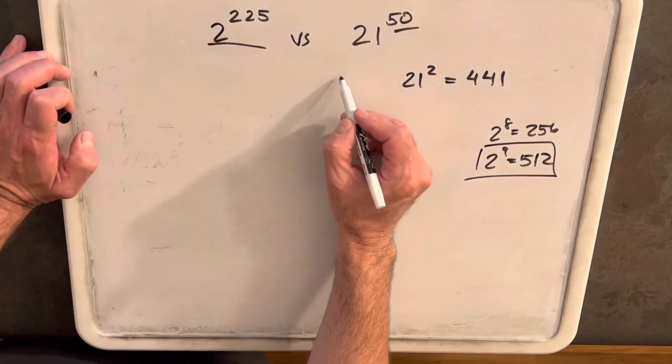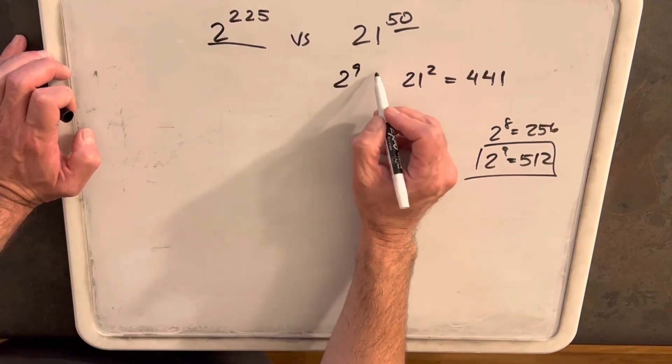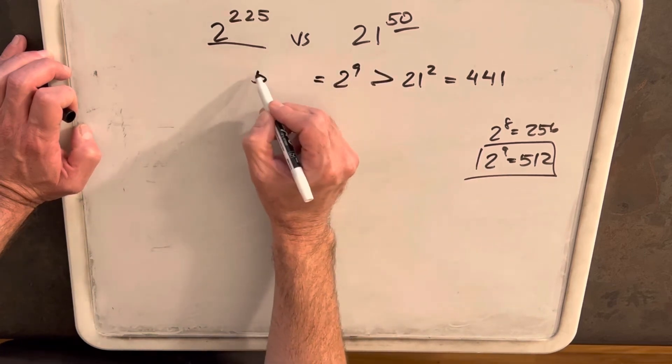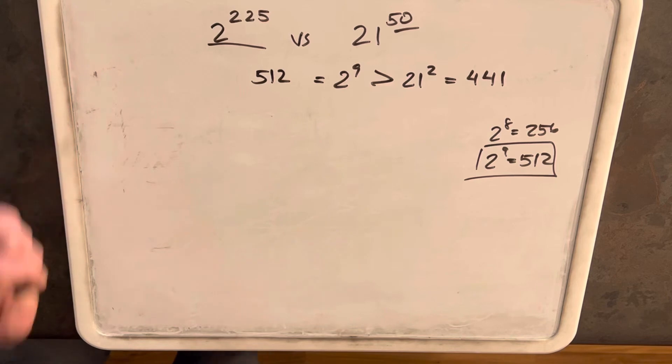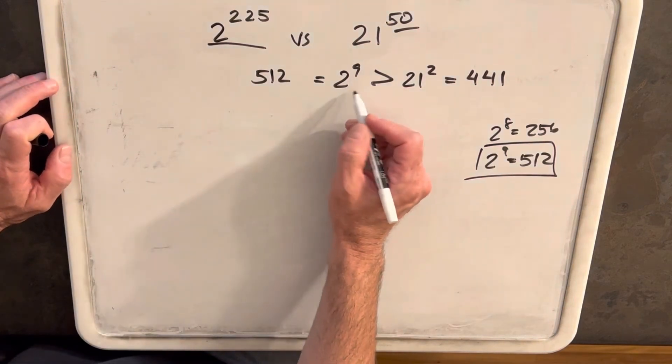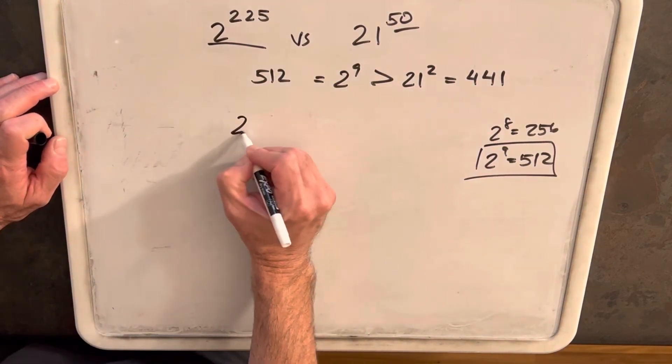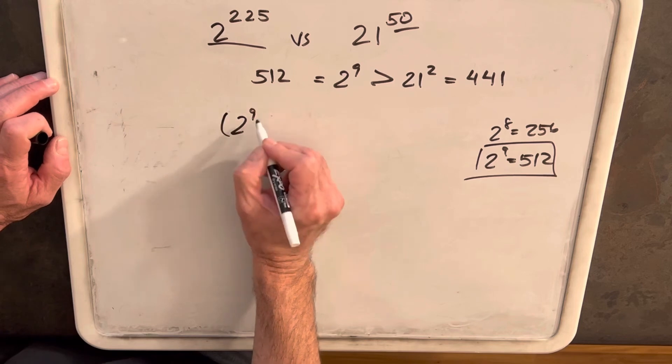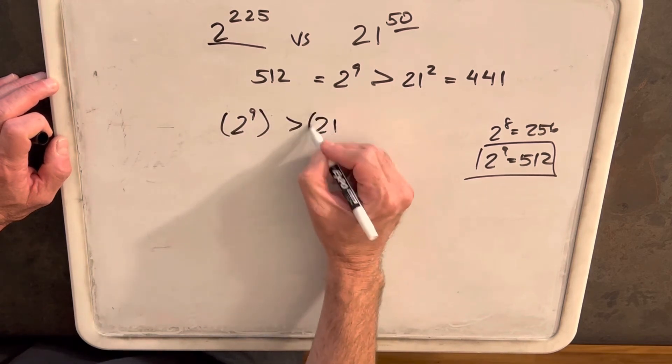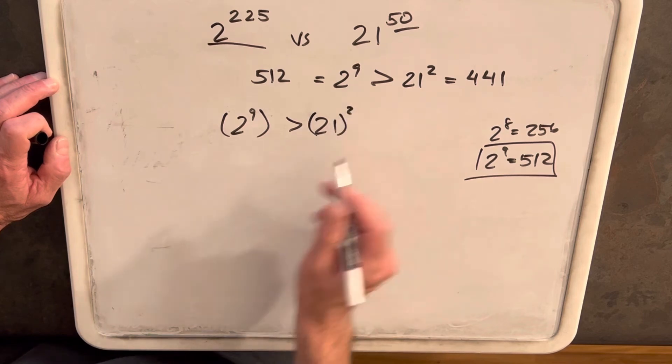So we can say 2 to the 9 is greater than 21 squared, because this is equal to 512. Okay, then what we can do, if 2 to the 9 is greater than 21 squared, we can take each side and we can raise it to the 25th power.